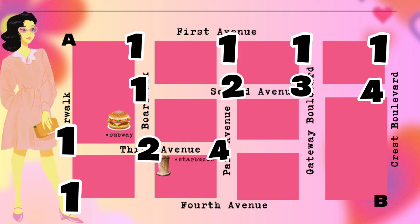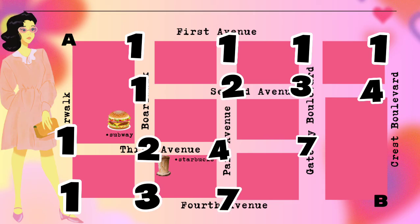Three plus four equals seven. Great job! We're almost there — just a little more and we'll get the total routes Anna can take. Next, we add the number two at Third Avenue and the number one at the lower part of River Walk: two plus one equals three. And four plus three equals seven.